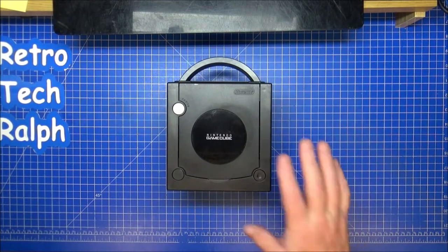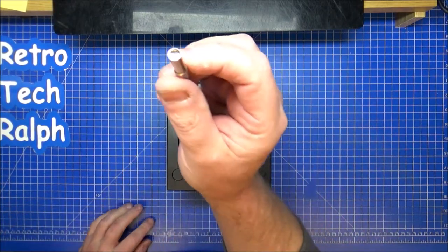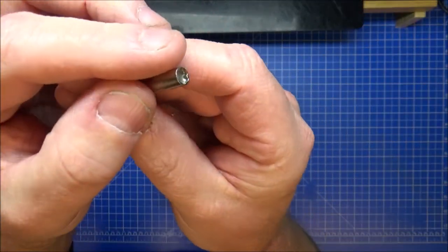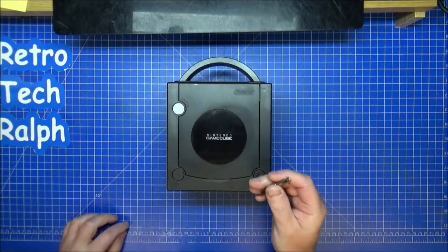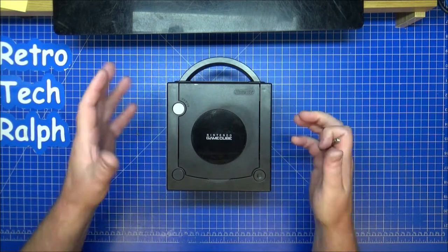What you need is a GameCube obviously, one of these little bits that will remove the security screws on the bottom of the GameCube, and a battery. Simple as. So here's what you do.